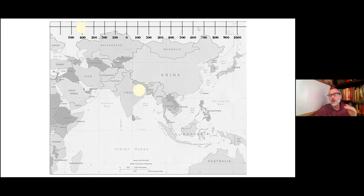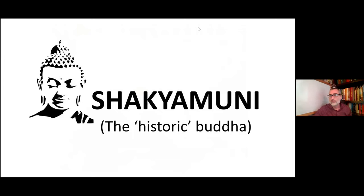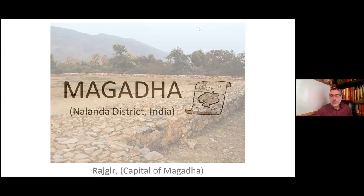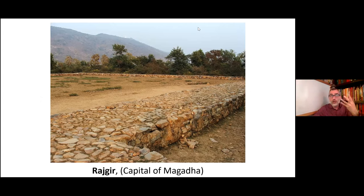All the ideas we're exploring tonight begin in India around the fifth century BCE. Our first Buddha is the so-called Historic Buddha — the Shakya Muni, meaning 'sage of the Shakya people.' Shakyamuni, the original historic Buddha, was from a region of northeastern India called Magadha, in what is today the Nalanda district. If you went searching for a visual or archaeological record of Siddhartha, you'd arrive near Rajgir, the capital of Magadha.